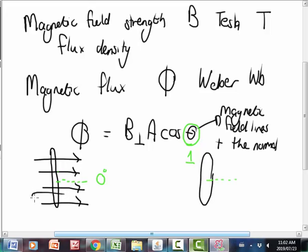If we now turn this coil so that it's parallel to the magnetic field lines, you then draw your normal. And now we measure the angle between the magnetic field lines and the normal, and we see that this angle is now 90 degrees. Cos 90 degrees gives you zero.